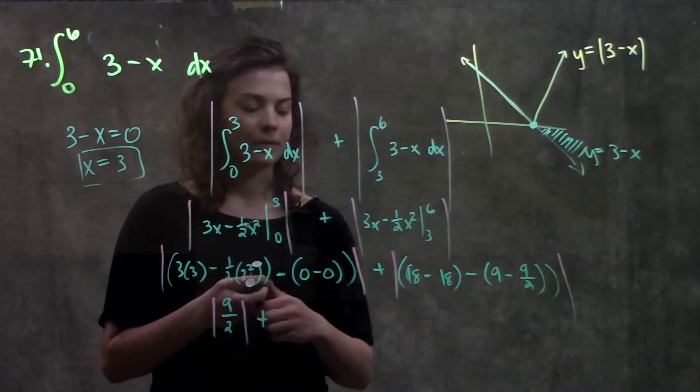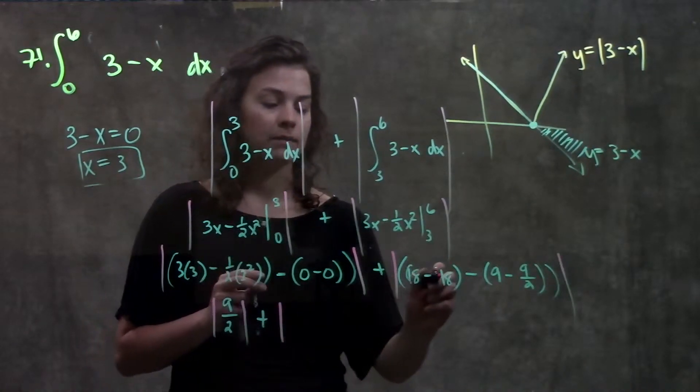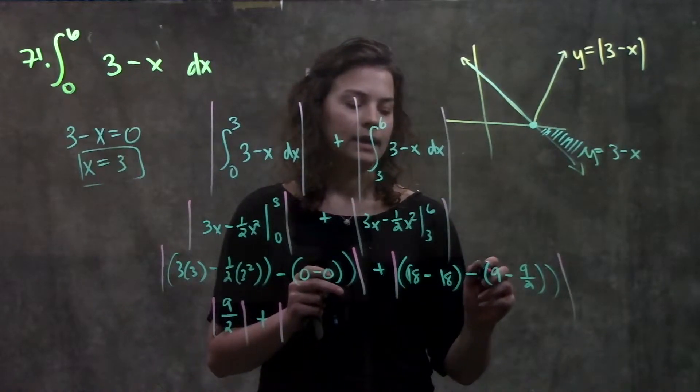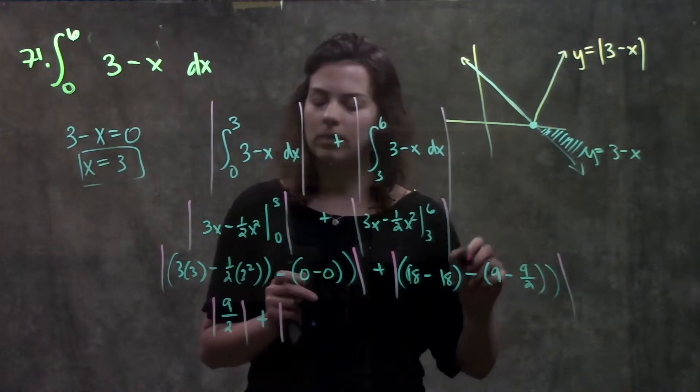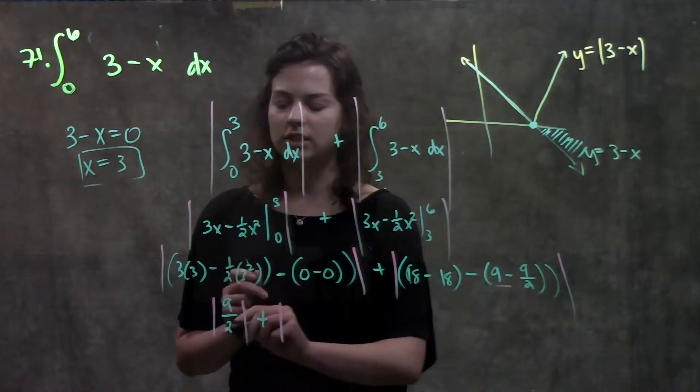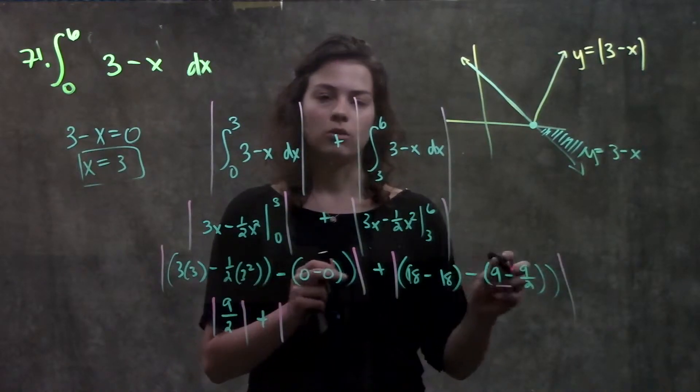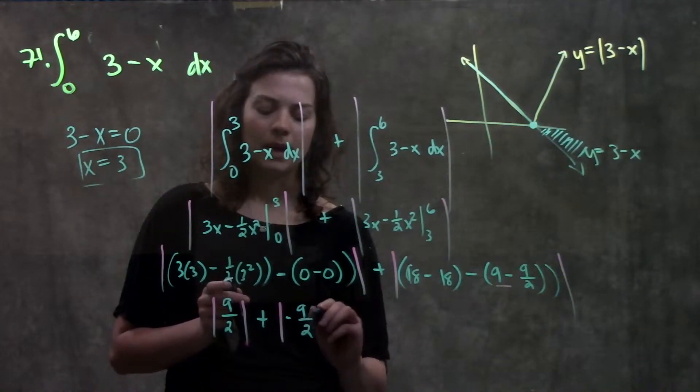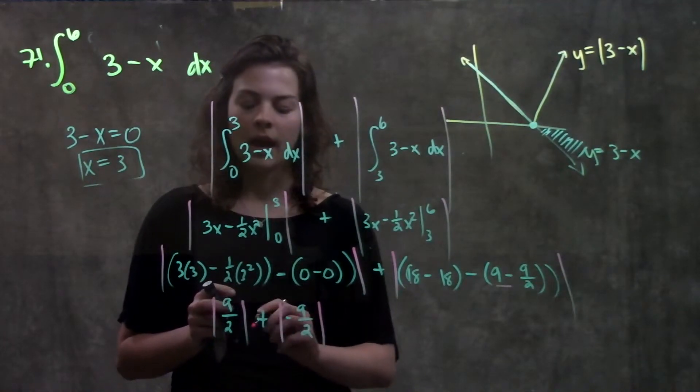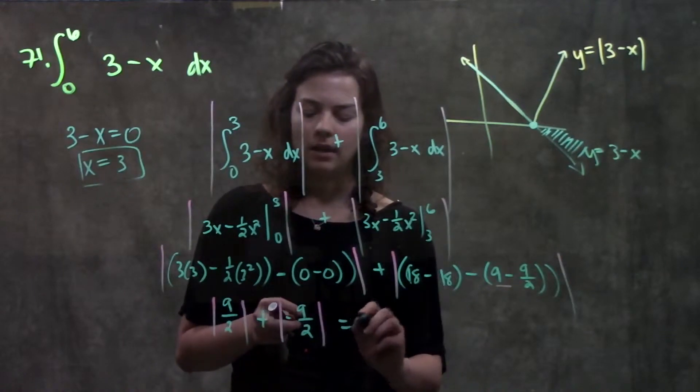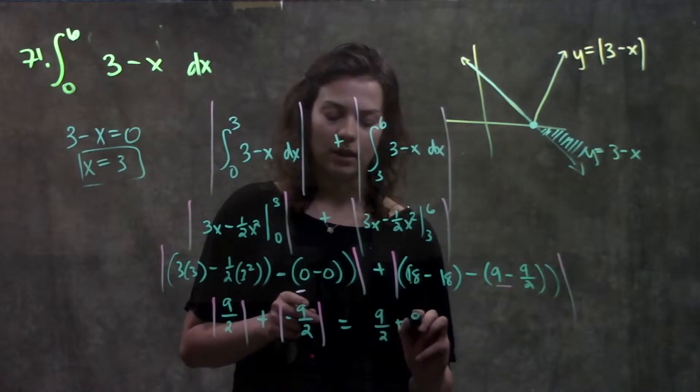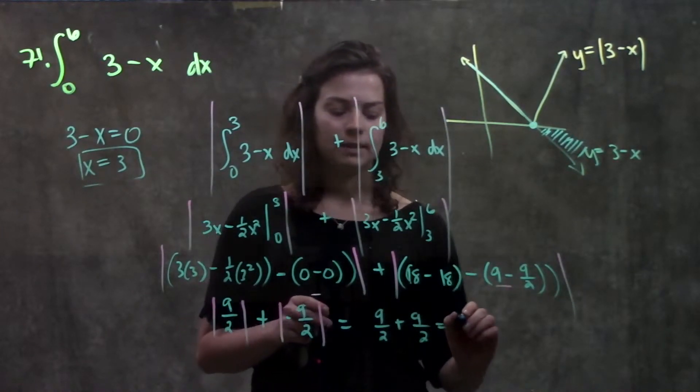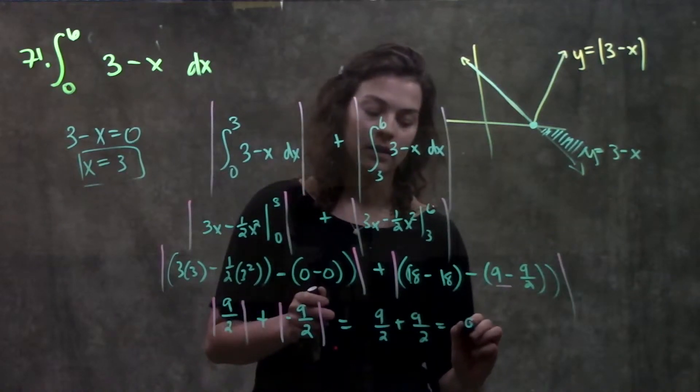Plus, the absolute value of 18 minus 18 is just zero. So now I have zero minus nine over two. Remember, this value here is just equal to nine over two. Zero minus nine over two gives me negative nine over two. But because I have my absolute values, this just becomes nine over two plus nine over two, which becomes 18 over two, which just reduces down to nine.